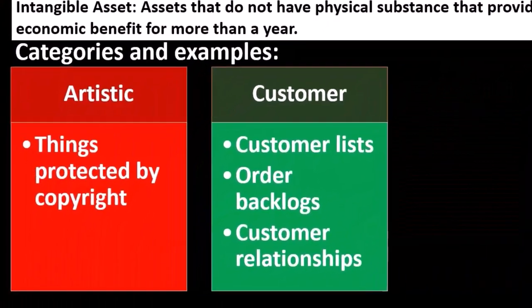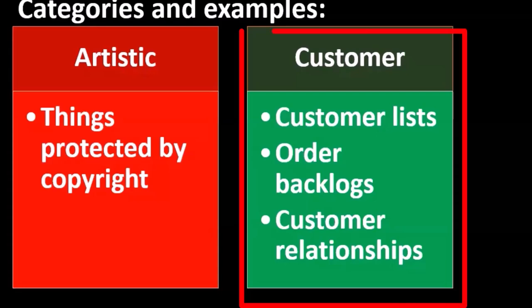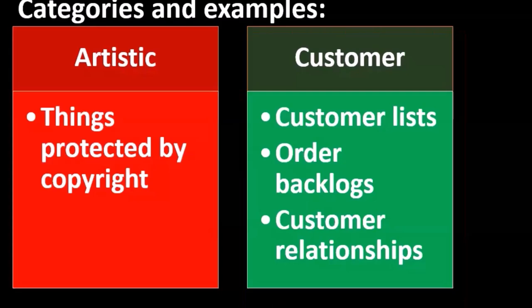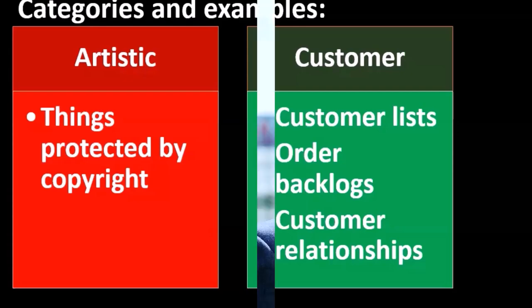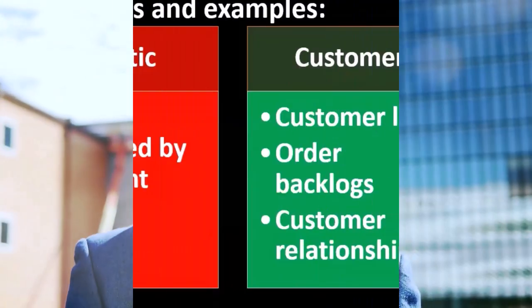Customer-related items — things like customer lists, order backlogs, and customer relationships — are types of assets that are not tangible. They're not things we would typically think of if we were to list our assets and liabilities, but they clearly have value. Customer lists, order backlogs, and customer relationships are clearly valuable assets.